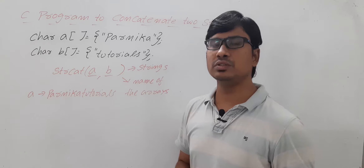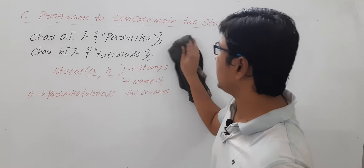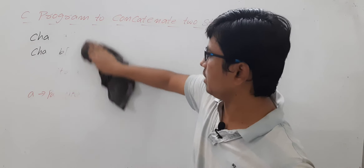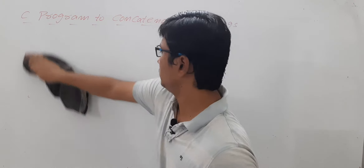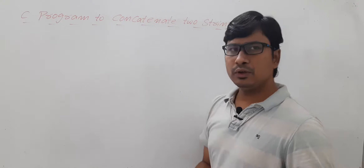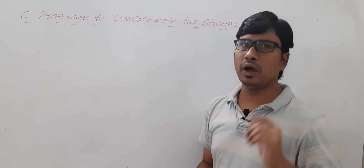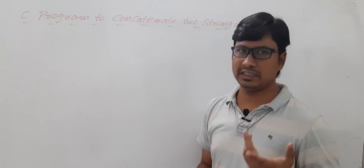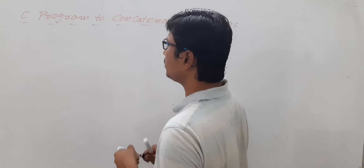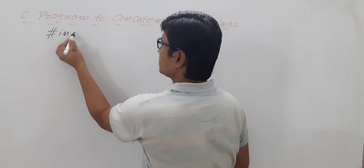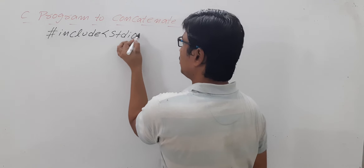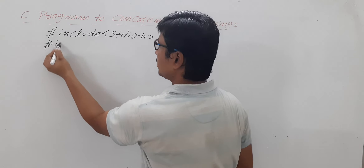Now we will write a C program to concatenate two strings using the strcat function, and then I will discuss the same without using strcat. Whenever you want to use any string handling function, you have to include the header file string.h. So let me include the header files: stdio.h (standard input output) and string.h.